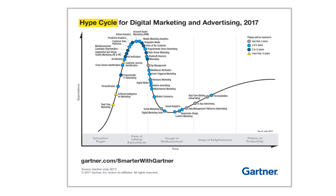Each year, Gartner releases more than 90 plus hype cycles related to various technology domains. Some of the recently released hype cycles relate to domains such as machine learning, artificial intelligence, data management, digital marketing, internet of things, blockchain, and others.